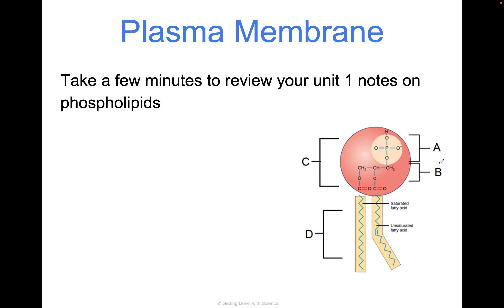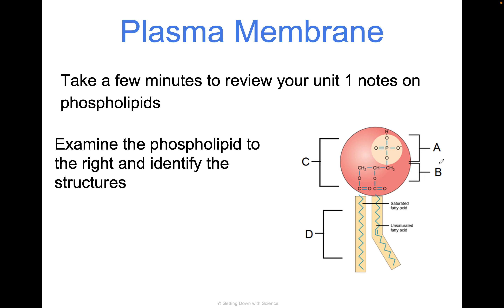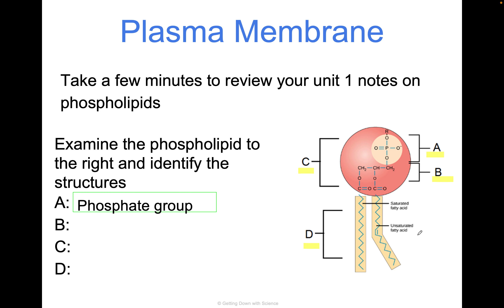Take a few minutes to review your notes on Unit 1 — Unit 1 is not going anywhere. Take a look at this phospholipid. We have seen this before. Examine the phospholipid and identify the structure. We have A, B, C, and D — four parts of this phospholipid we have to pay attention to. A, right up top, that's your phosphate group. We can tell because it's a phosphate in the middle with oxygens all around it.